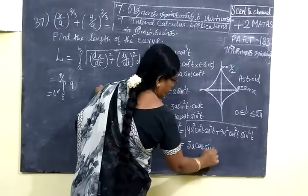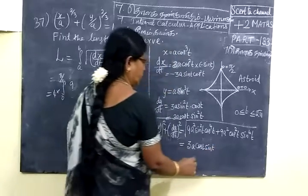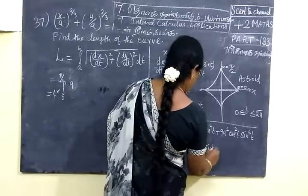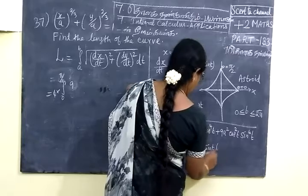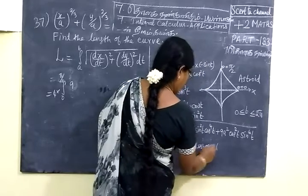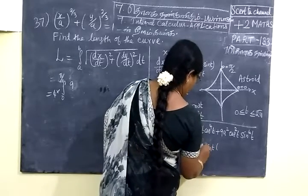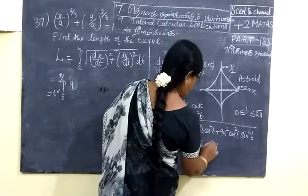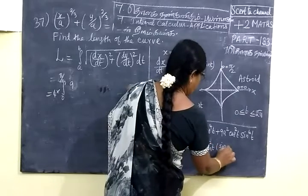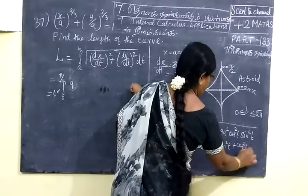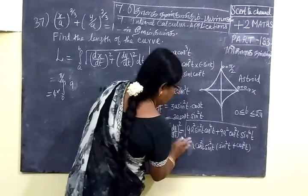So cos t, sin t. You will remember sin² t plus cos² t, and you take it as common. After that, we write it cos² t, sin² t is common itself. Here we are writing sin² t and cos² t.